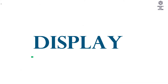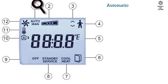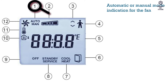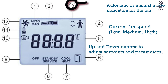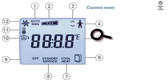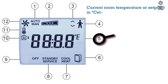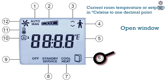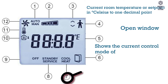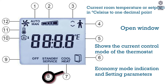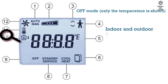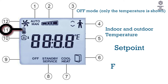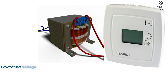The display has the following indications: (1) automatic or manual mode indication for the fan; (2) current fan speed — low, medium, high; (3) up and down buttons to adjust set points and parameters; (4) occupancy indication; (5) current room temperature or set point in degrees Celsius to one decimal point; (6) open window; (7) current control mode of the thermostat; (8) economy mode indication and setting parameters; (9) off mode — only the temperature is shown; (10) indoor and outdoor temperature; (11) set point; (12) fan status.